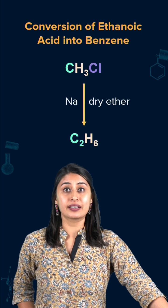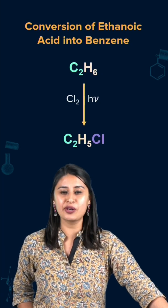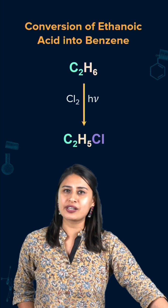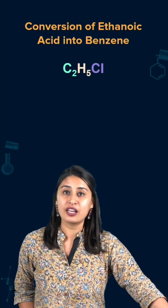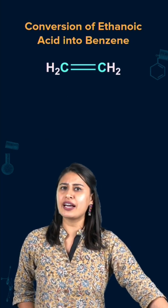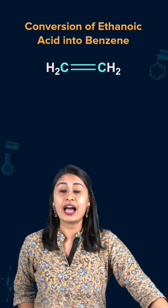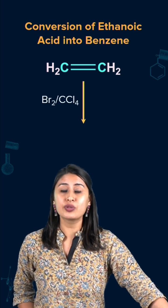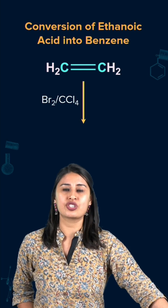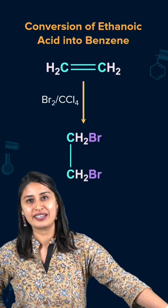Now what can we do? Again we can do halogenation so that we get ethyl chloride. Once we have ethyl chloride, we can do elimination such that we get ethene. But we need ethyne, so we add Br2 in the presence of carbon tetrachloride to get 1,2-dibromoethane.